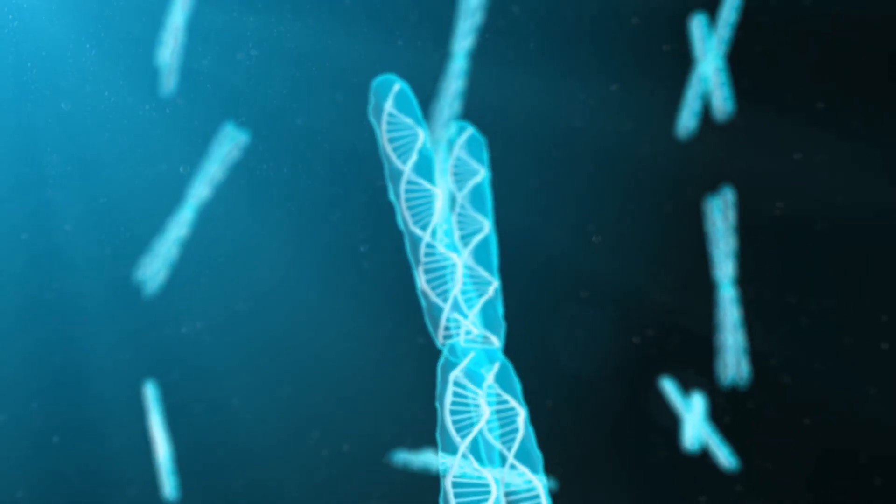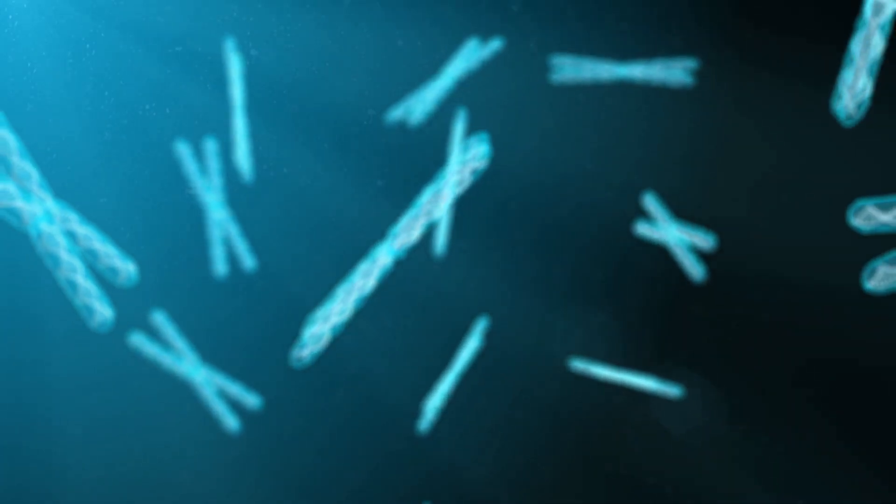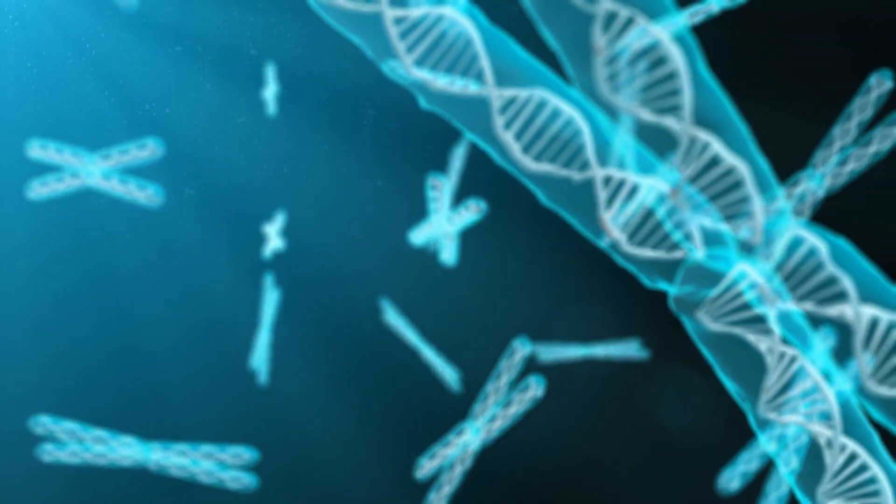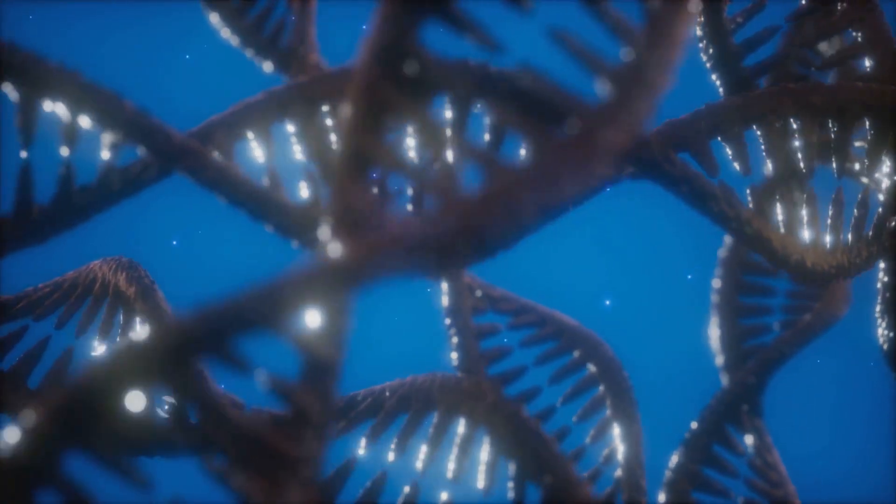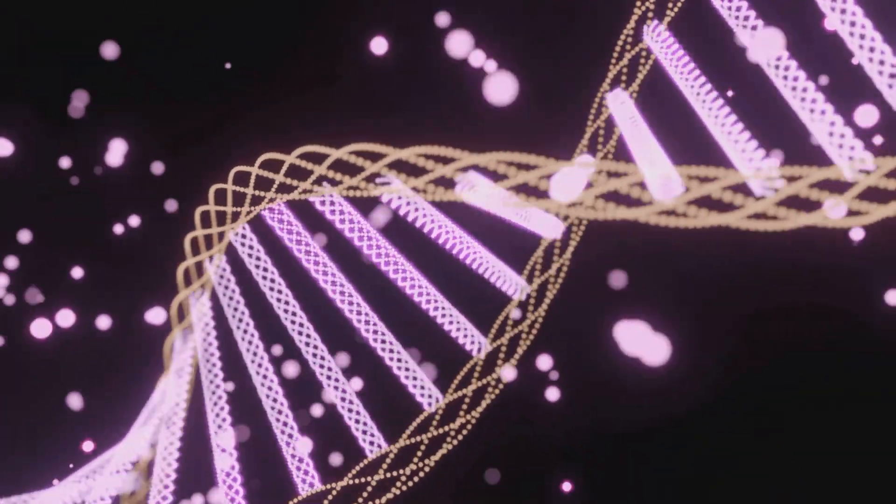Two key switches are DNA methylation, which sticks a do-not-read sign on a gene, and histone modification, which controls how tightly DNA is wound. Tightly wound DNA is off. Loosened DNA is on. These switches give every cell its unique identity.